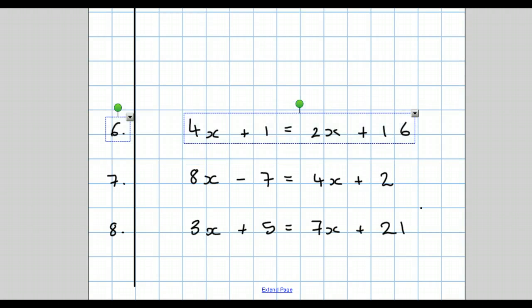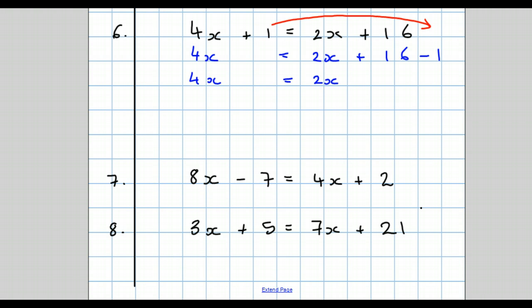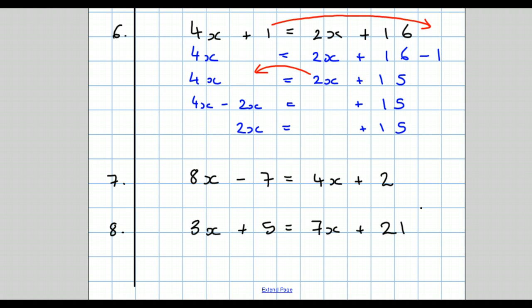Question 6: the first thing we do is move the numbers to join each other. Your first line of working should be 4x equals 2x plus 16, take away 1. There was a plus in front, so we take away. Simplify the right-hand side: 2x plus 15. Now move the letters together: 4x take away 2x equals plus 15. Simplify: 4x minus 2x is 2x equals plus 15. Final answer: x equals plus 15 all over 2.